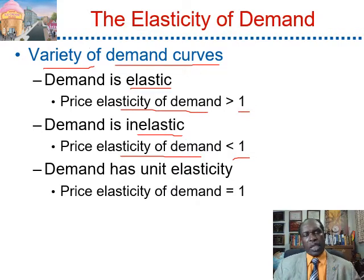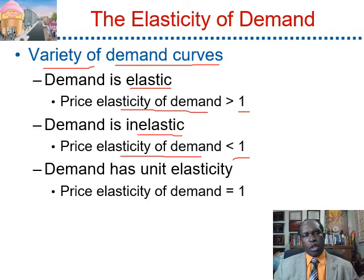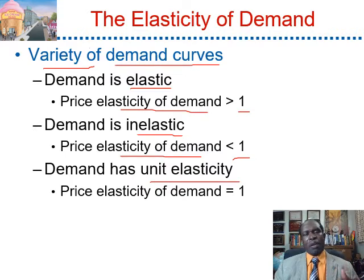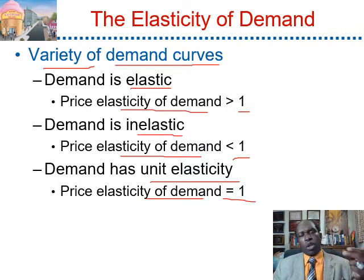For instance, price increases by 20% and quantity decreases by 10%, so demand will be inelastic. Demand has unit elasticity when the value of the elasticity is equal to 1. Therefore, the percentage change of the quantity is exactly equal to the percentage change of the price. For instance, if price increases by 40% and quantity decreases by 40%, then the value of the elasticity will be 1.